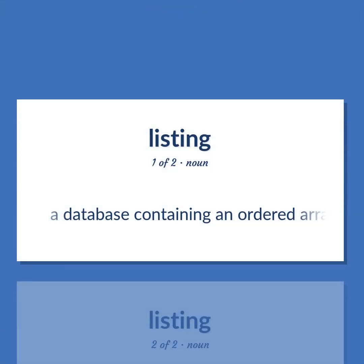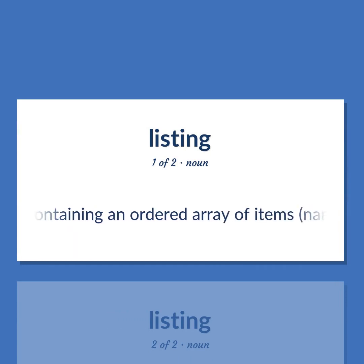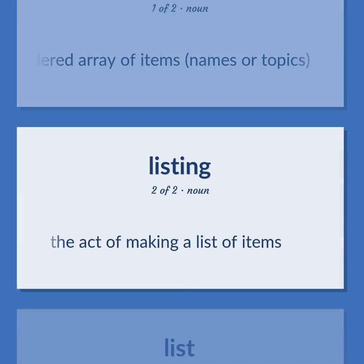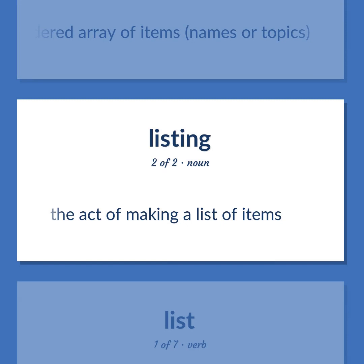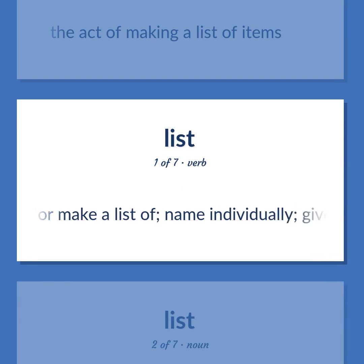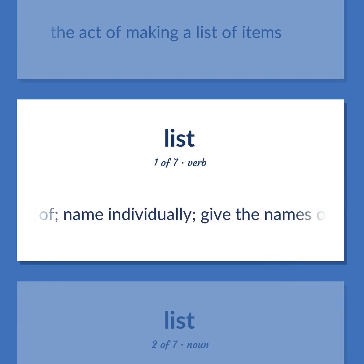List: A database containing an ordered array of items, names or topics. The act of making a list of items. Give or make a list; name individually; give the names of.